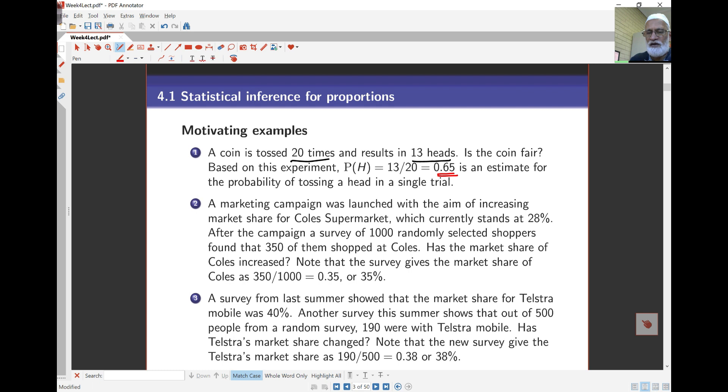Another example: a marketing campaign launched with the aim of increasing market share for Coles, which actually stands at 28% at the moment. This is real data. If we run the campaign and after the campaign we survey a thousand shoppers and ask them who they shop with, and we get 350 saying they're Coles customers, that means my sample or observed proportion is 0.35 or 35%. Does that mean the marketing campaign has increased the market share of Coles?